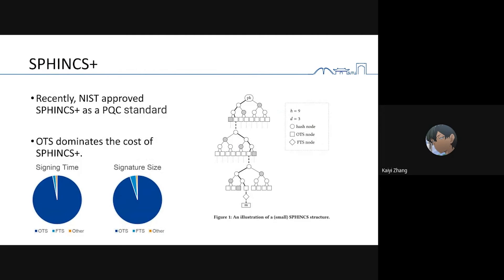SPHINCS+ is a variant of tree-based signature. We can see one-time signature dominates the cost of SPHINCS+, including both sign time and signature size. So if we want to improve SPHINCS+, we should focus on one-time signature.